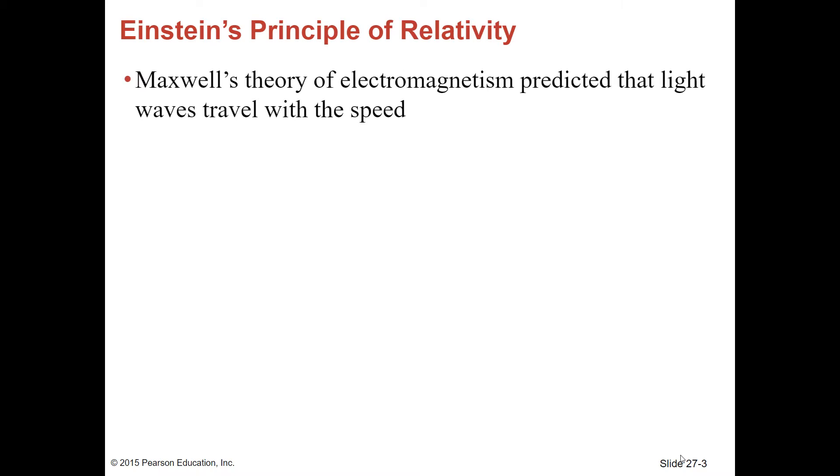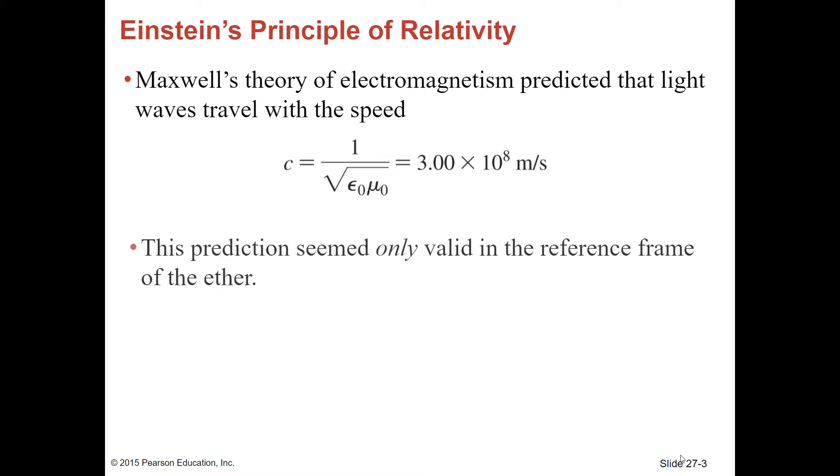Maxwell's theory of electromagnetism predicted that light waves travel with a speed. He predicted that the speed of light would be 3.00 times 10 to the 8 meters per second. This prediction seemed only valid in the reference frame of the ether.